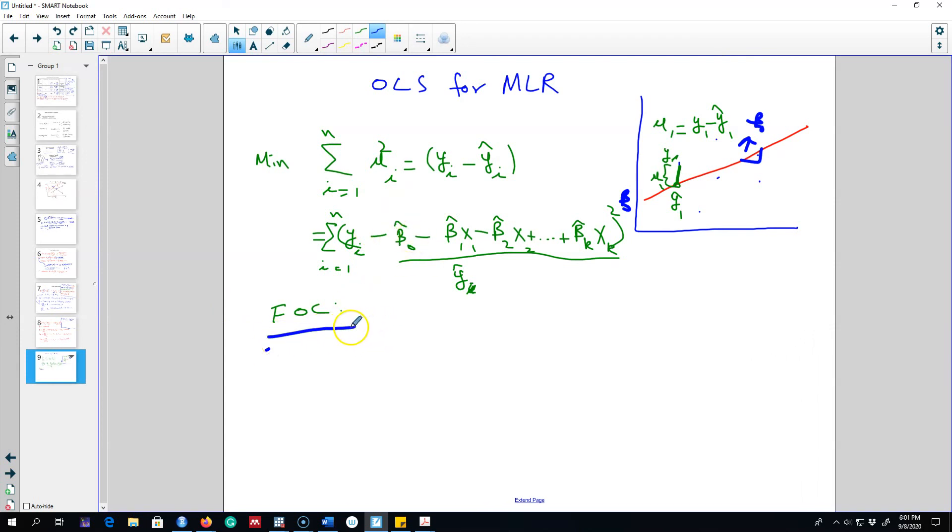So that is ordinary least squares in multiple linear regression. In the next video, I'm going to show you a couple of examples applying this ordinary least squares principle and the interpretations that I showed you earlier. I think everything that you learned so far in this chapter will make sense to you after going through those examples. Okay, I'll see you in the next video. Bye bye.